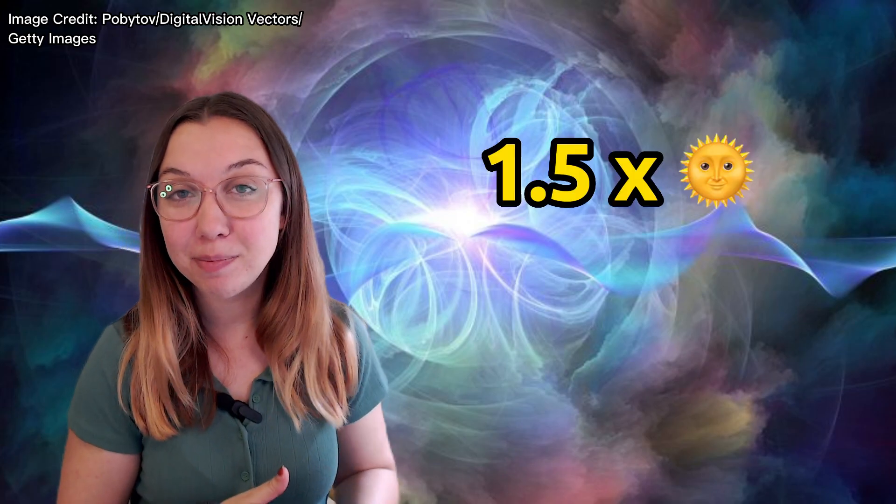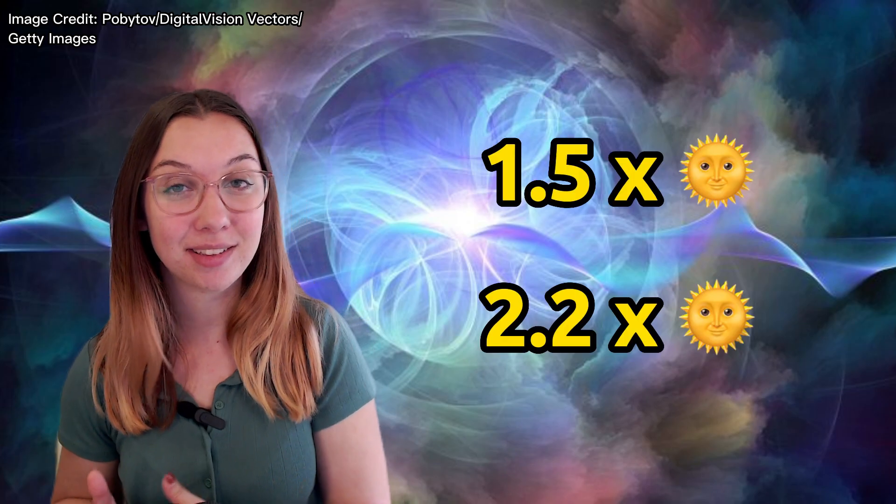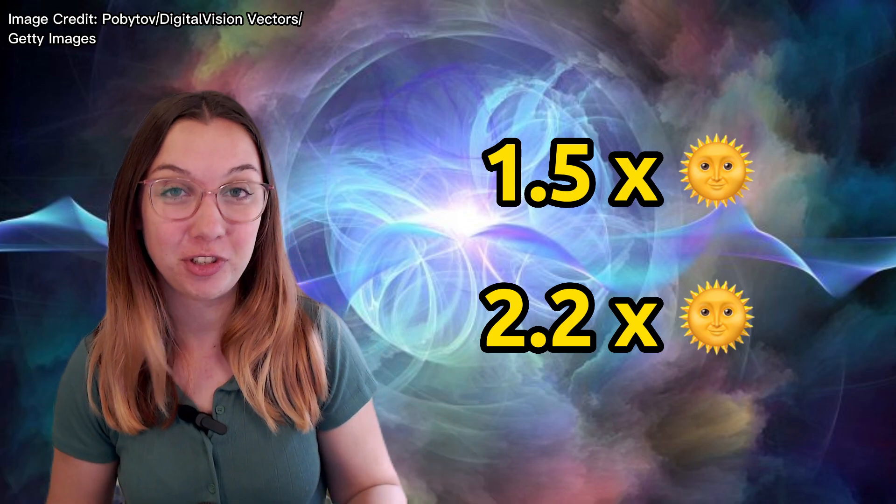But we didn't always think it was this small. Previous estimates of the mass of this neutron star range between 1.5 times the mass of the Sun and 2.2 times the mass of the Sun which are perfectly reasonable masses for neutron stars.